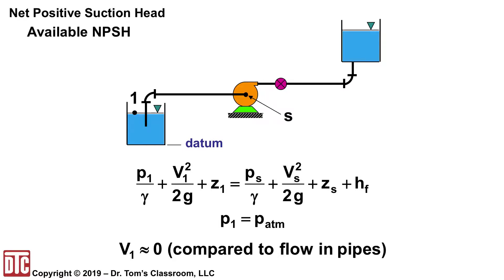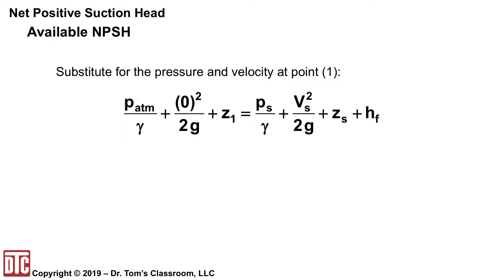And so we know a lot about the different things. We certainly know if this is an open top tank, P1's P atmosphere and the velocity at 1 is 0 compared to the flow in the pipe. So that's one of our typical assumptions that we've made. So we substitute those into our equation. We've got P atmosphere over gamma on the left, the 0 squared, the Z1, the PS and the VS and ZS on the right hand side.